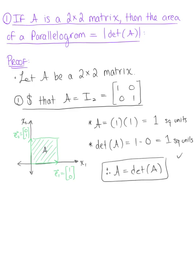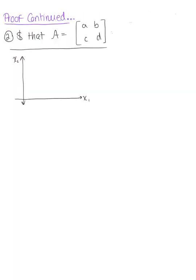Now we consider the case where A is not an identity matrix. In case 2, suppose the 2 by 2 matrix A is defined by entries A, B, C, D. Starting with the geometric interpretation: from the origin, the first column vector is (A, C), with A on the x₁ axis and C on the x₂ axis. The second column vector is (B, D), with B on the x₁ axis and D on the y axis. Using the parallelogram rule, this gives us the area of the parallelogram we are trying to find.